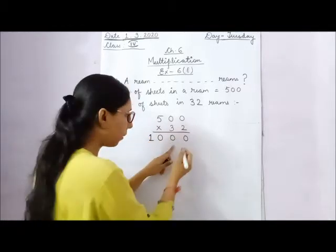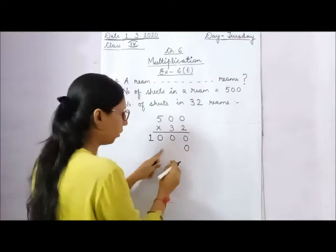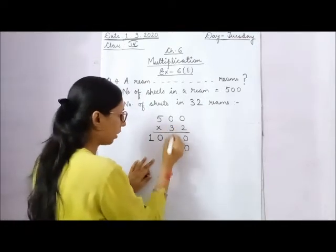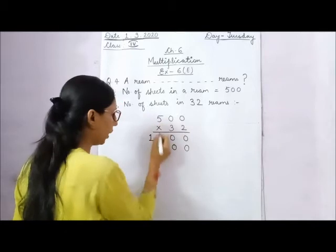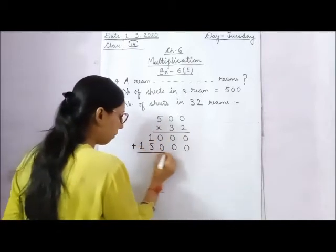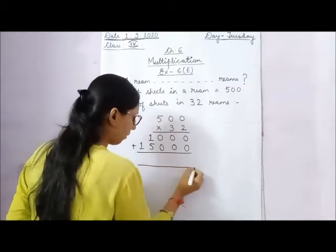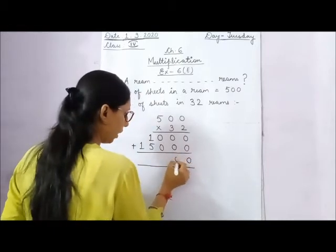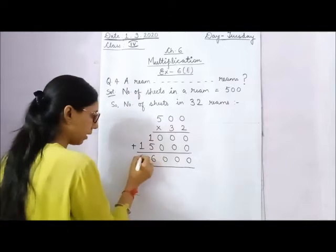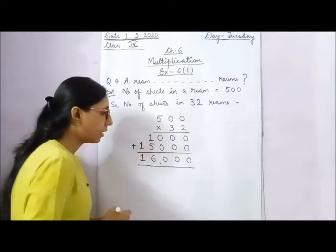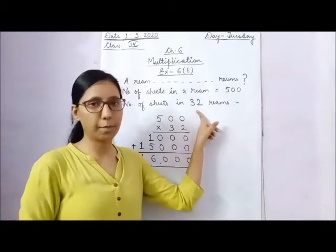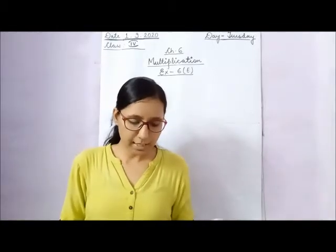We have 1 to carry forward, so write 0 here. Now multiply with 3: 3 into 0 is 0, 3 into 0 is 0, 3 into 5 is 15. Now add the numbers: 0, 0, 0, then 5 plus 1 is 6 and 1. So there are 16,000 sheets of paper in 32 reams.